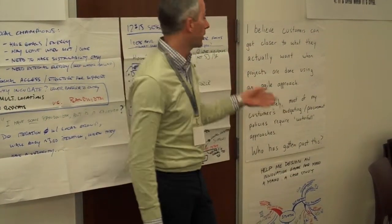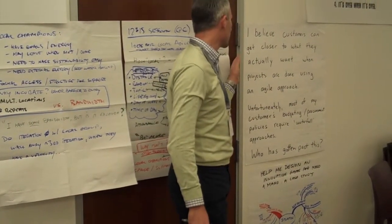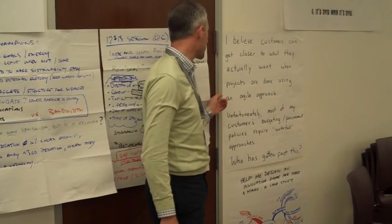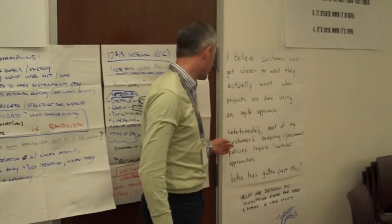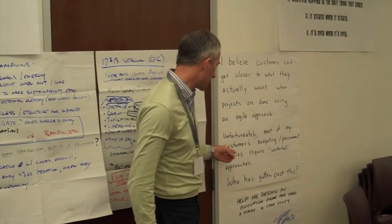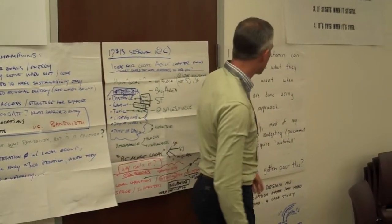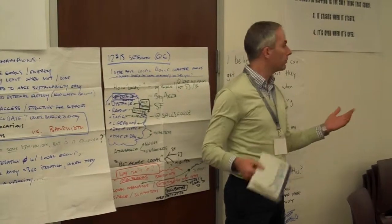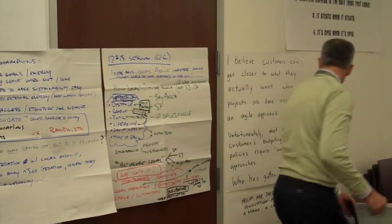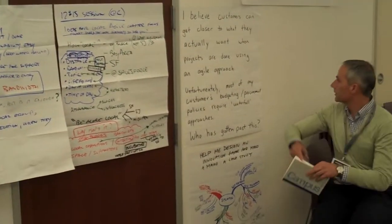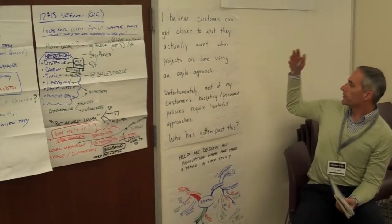I believe customers can get closer to what they actually want when projects are done using an agile approach. Unfortunately, most of my customers' budgeting and procurement policies require waterfall approaches. Who has gotten past this? One suggestion: put a waterfall face on top of agile.